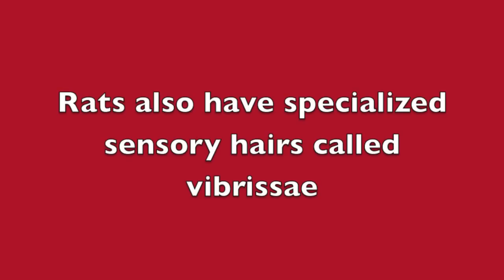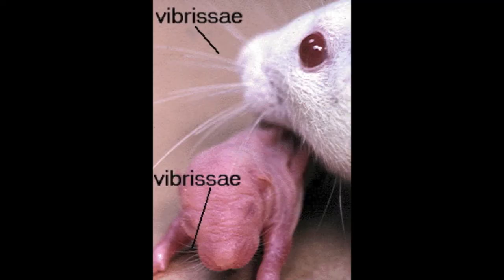Rats also have specialized sensory hairs called vibrissae. Vibrissae grow from the snout, upper eyelid, cheek, and chin of the rat.